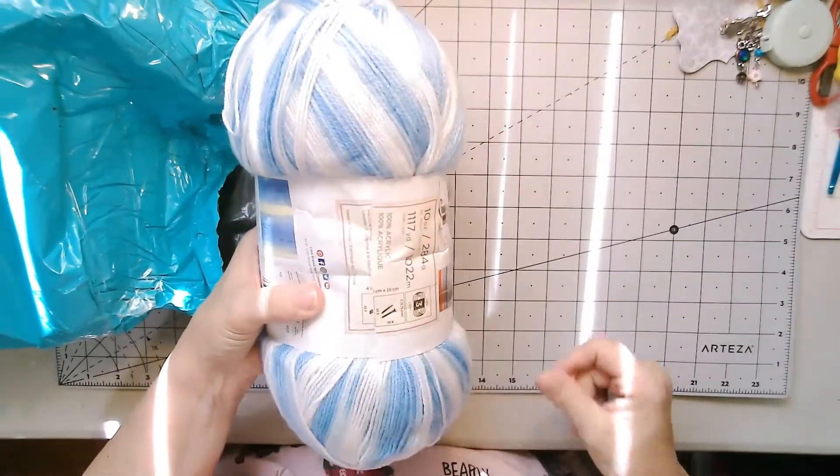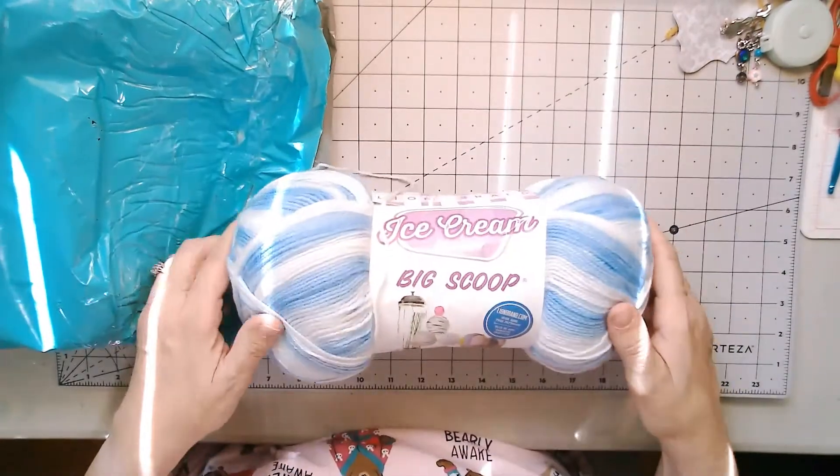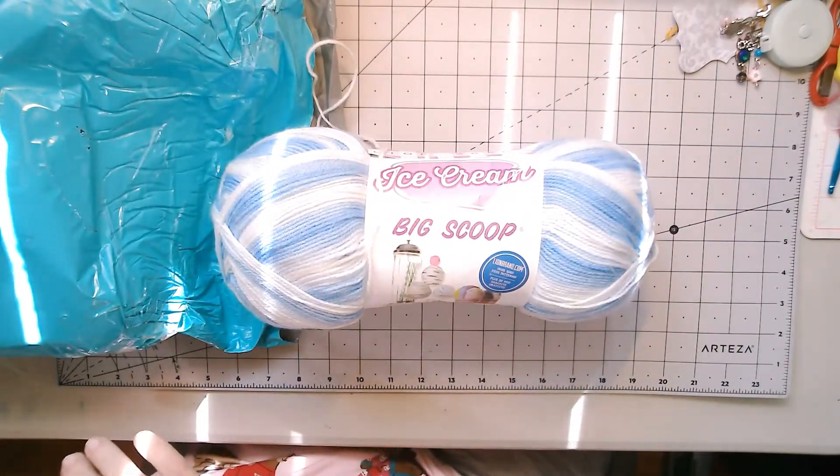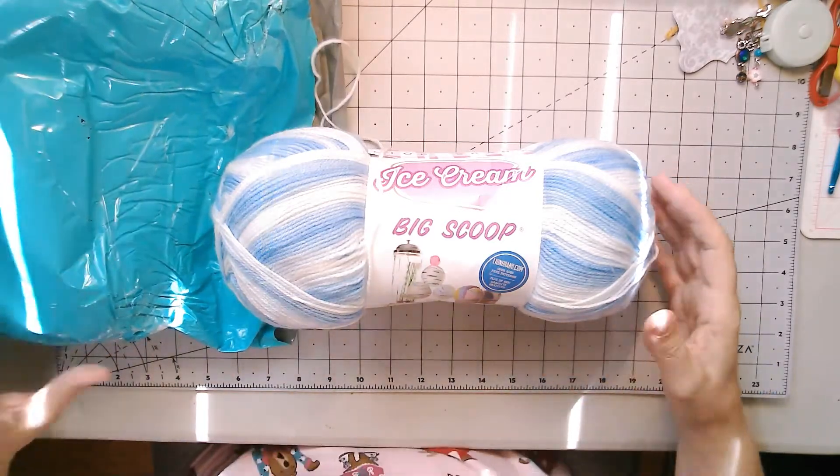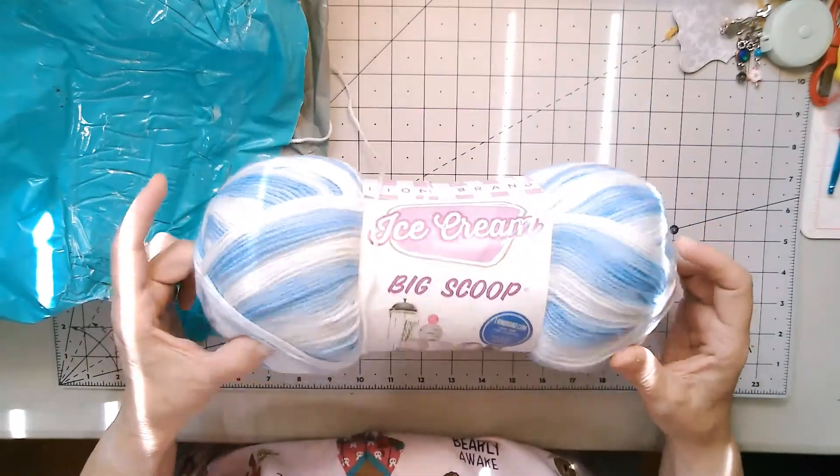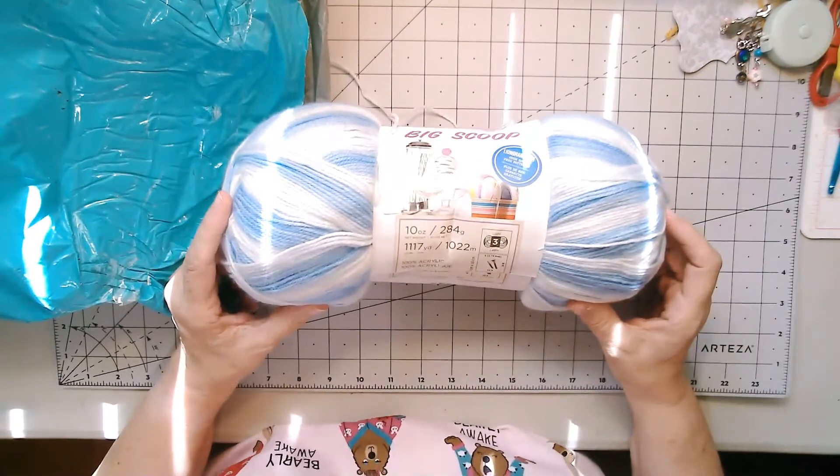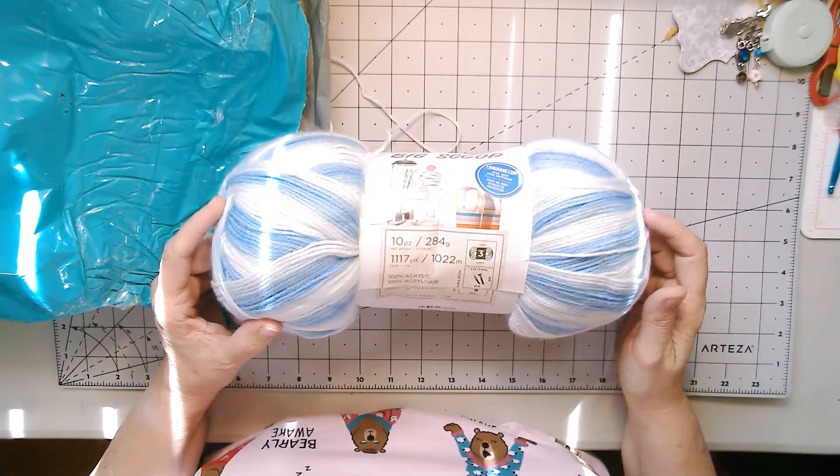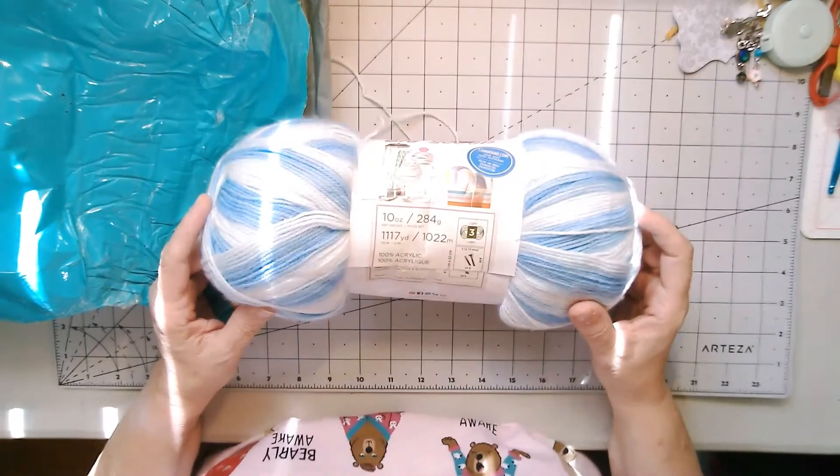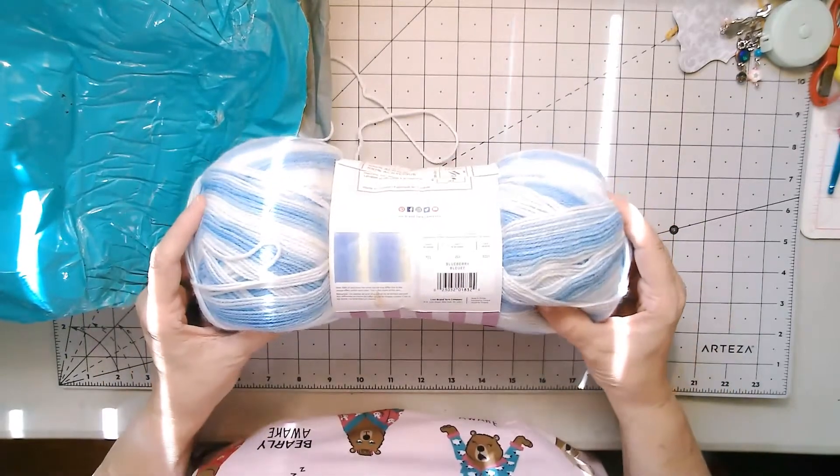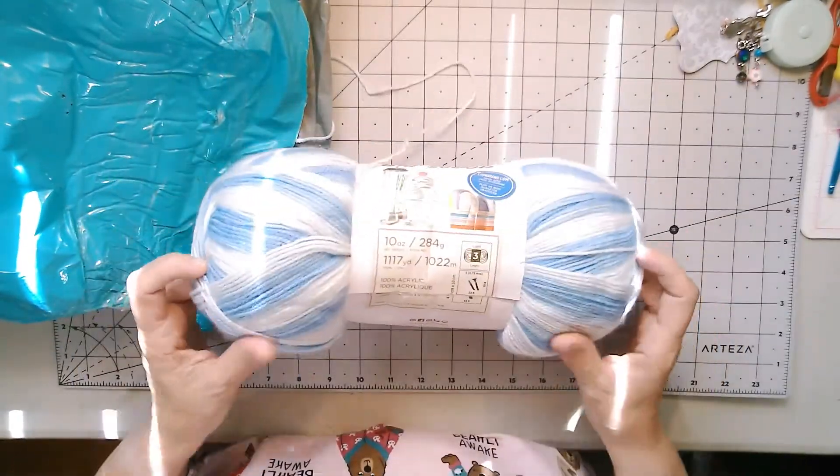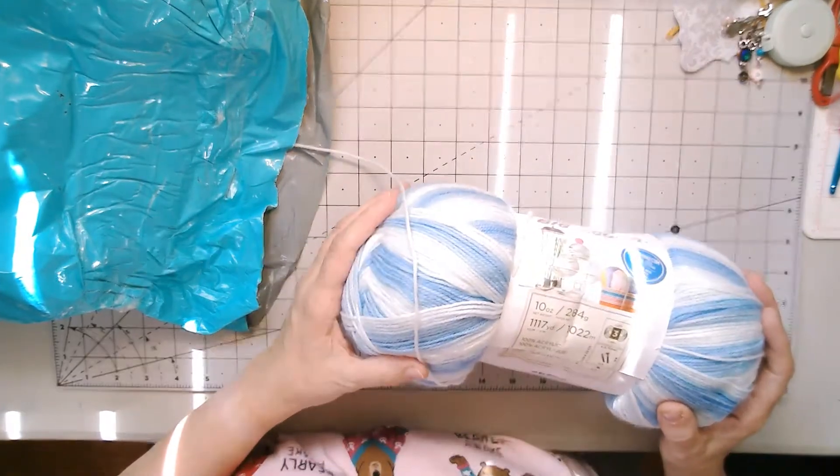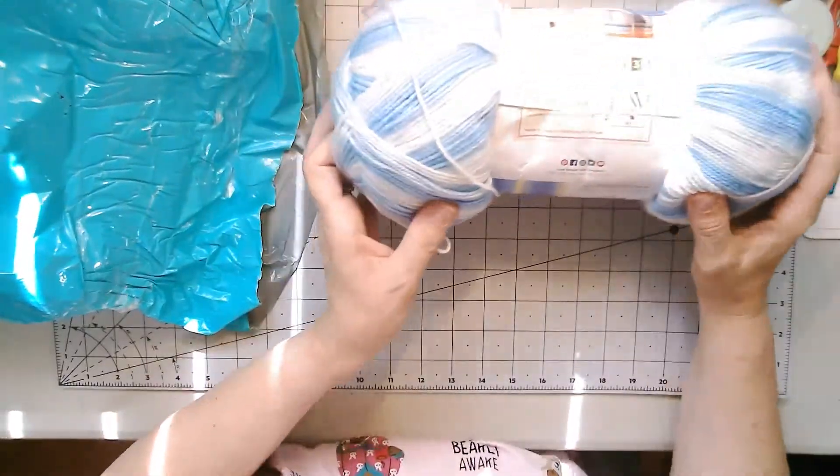I'm going to reach in here and she included this ball of yarn. Let me move my keyboard out of the way. And this is Lion Brand Ice Cream Big Scoop yarn. There's 284 grams, that's 1,117 yards. It's a light three weight and the color is blueberry. So that's pretty. And it is 100% acrylic. So there's that one.